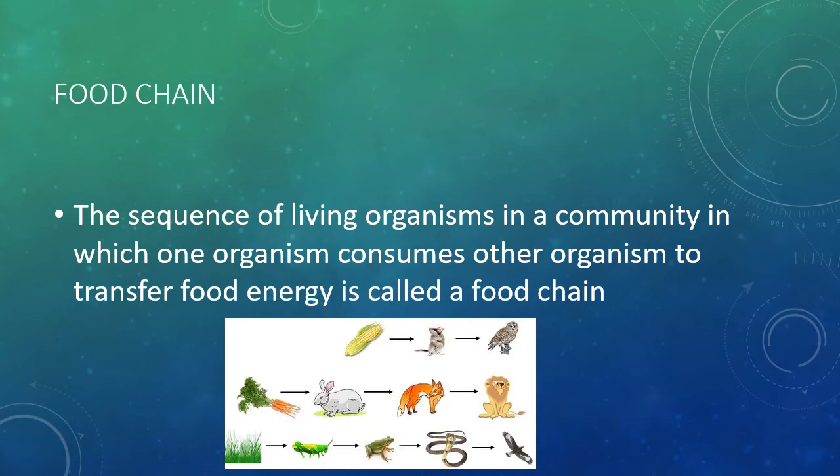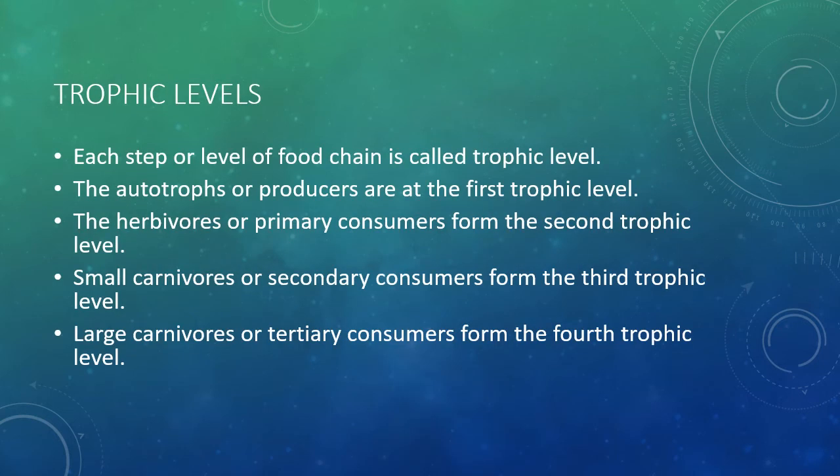Food Chain: The sequence of living organisms in a community in which one organism consumes another to transfer food energy is called a food chain. Each step or level of a food chain is called a trophic level. The autotrophs or producers are at the first trophic level. The herbivores or primary consumers form the second trophic level. Small carnivores or secondary consumers form the third trophic level. Large carnivores or tertiary consumers form the fourth trophic level.